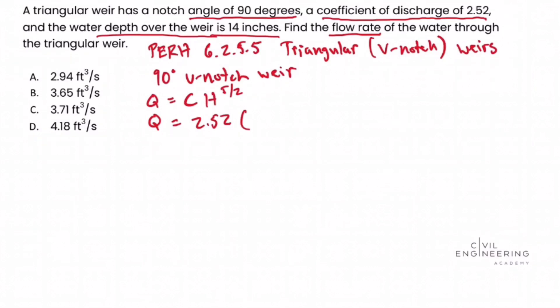this equation requires that the depth over the weir is in feet. And we're given inches in the problem statement. So we need to take our 14 inches and convert it to feet, which we do by dividing it by 12 for unit conversions. And then we raise this whole quantity in parentheses to the 5 halves.